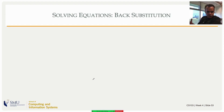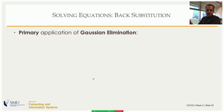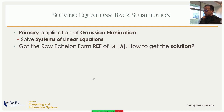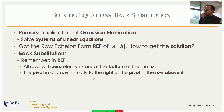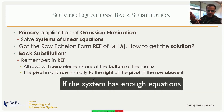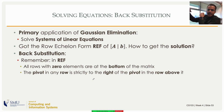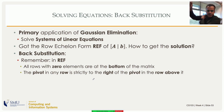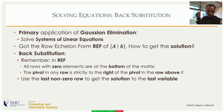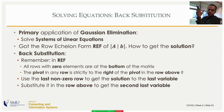After Gaussian elimination we have an upper triangular matrix, but we still don't have the solution. The next step is back substitution. Take the last non-zero row of the upper triangular matrix — it has only one variable on the coefficient side — solve that variable, then substitute back into the previous row to get the next variable. You go down the matrix during row elimination, then go back up using back substitution.